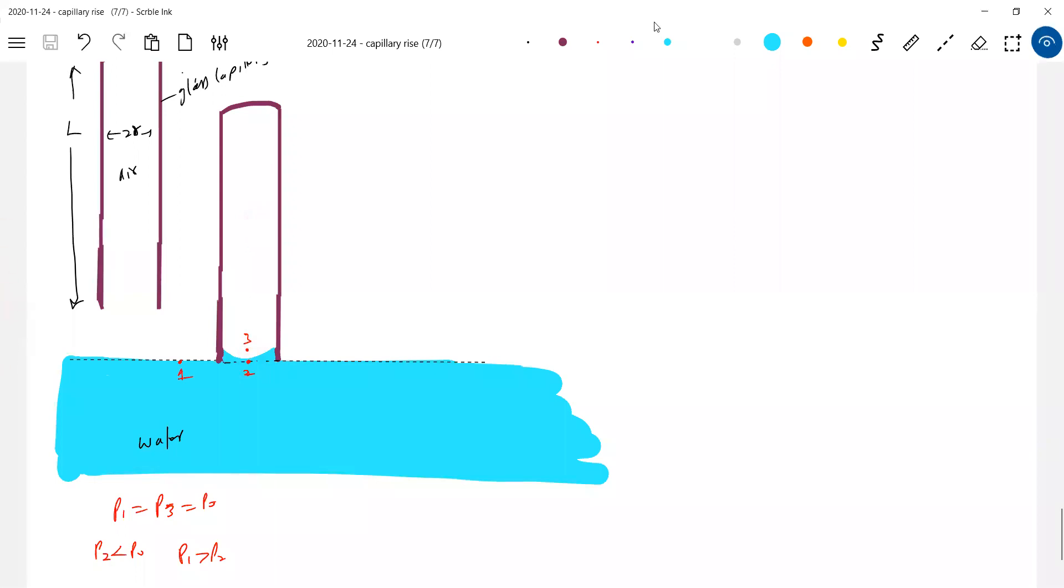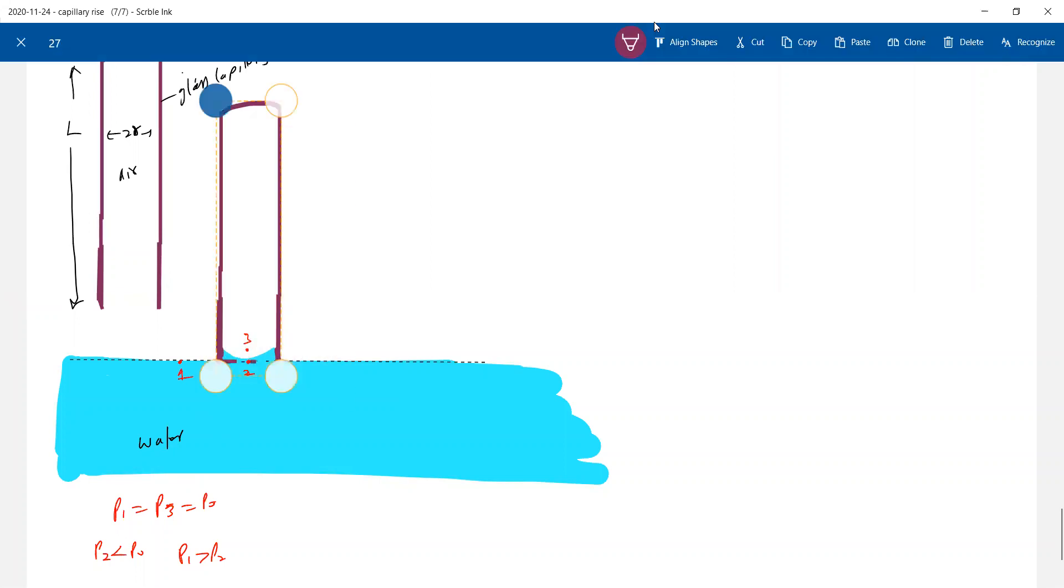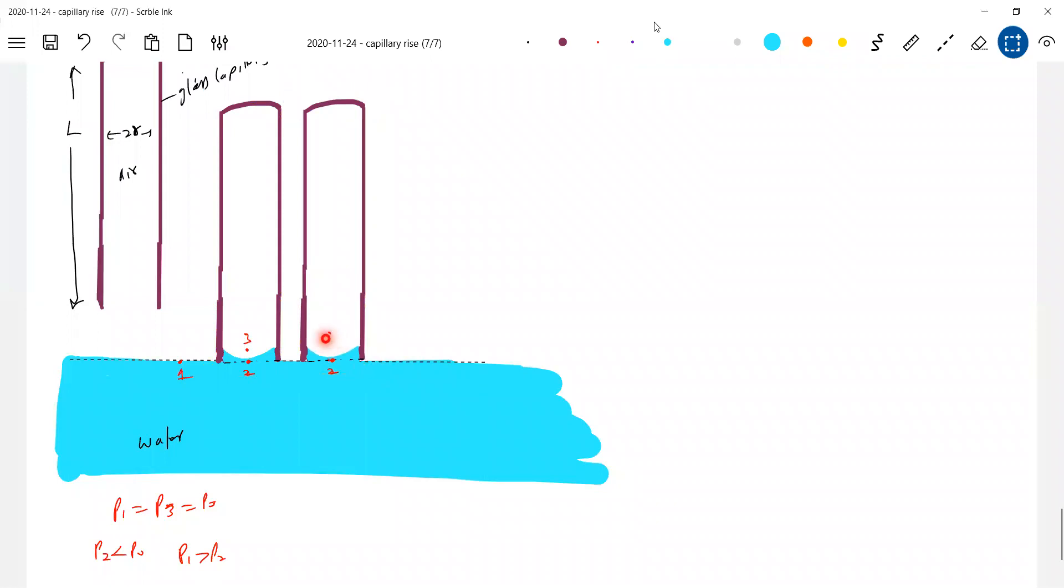Getting the idea? So now, what is the next part of the problem? So I had to show that water will rise to a certain height. Why will water rise? I think the student has to really put effort. Otherwise, saying capillary water will rise doesn't work out. Why it will rise? What is the reason? One has to think here.